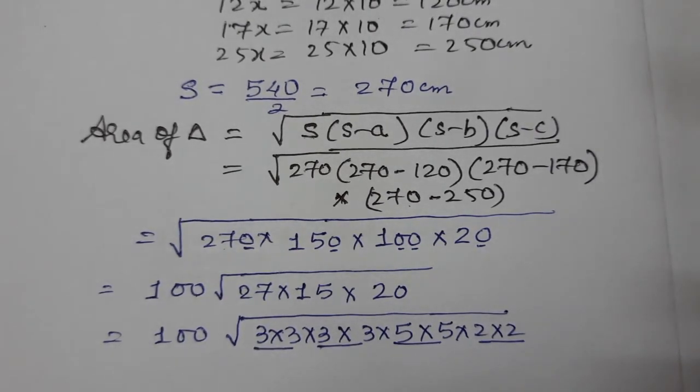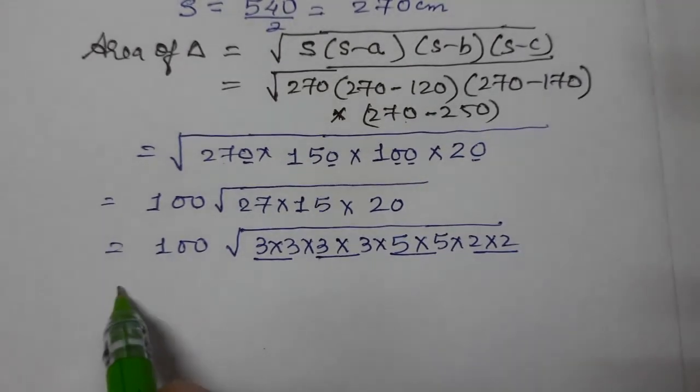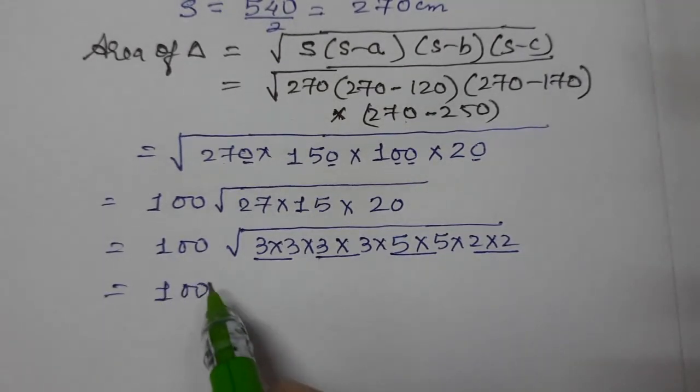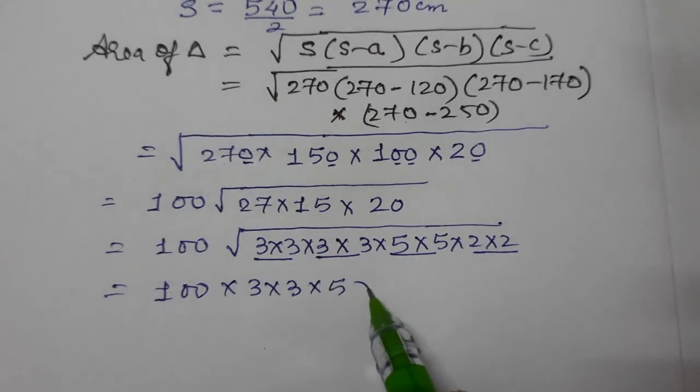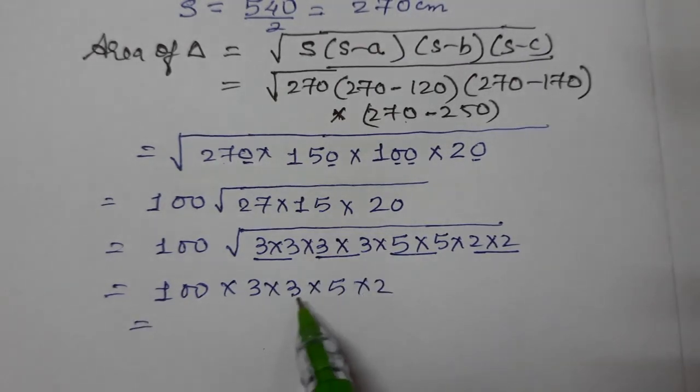Means there is nothing left after factoring. So we get 100 times, then pairs: 3 times 3 is 9, then another 3, then 5, then 2. So what result will you get? 5 times 2 is 10, 10 times 3 is 30, 30 times 3 is 90, and 90 into 100 is 9000.